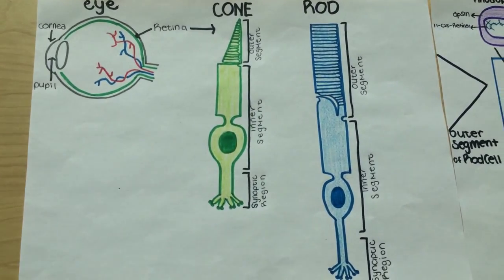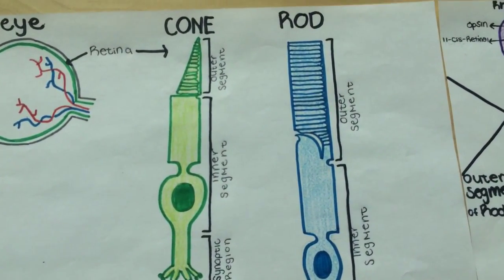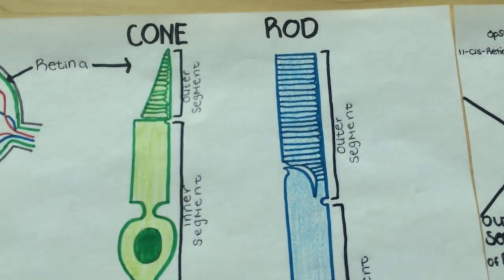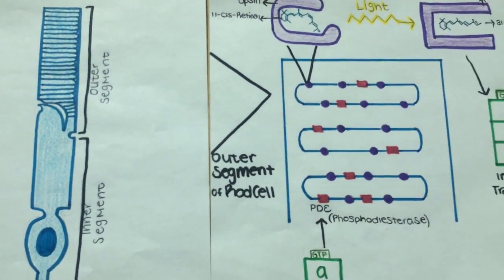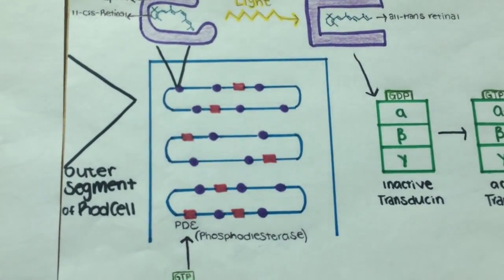The outer segment is composed of these discs, which contain the photopigment rhodopsin. Here, we have the outer segment of a rod cell.